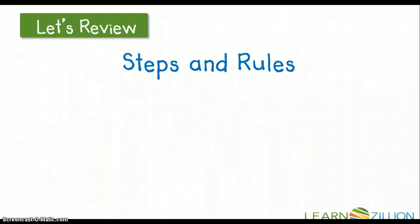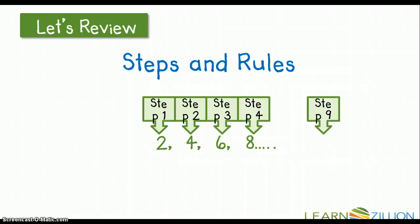So let's review steps and rules. These are numbers that we have: 2, 4, 6, 8. 2 is our step 1, 4 is step 2, 6 is step 3, 8 is step 4. And we want to know what number happens when we get to step 9. So as you can see, our numbers are increasing. So obviously, we're either adding or we're multiplying. In this case, we're adding. So 2 plus 2 gives me 4, 4 plus 2 gives me 6, 6 plus 2 gives me 8. And then I would continue that pattern until I got to the 9th step.